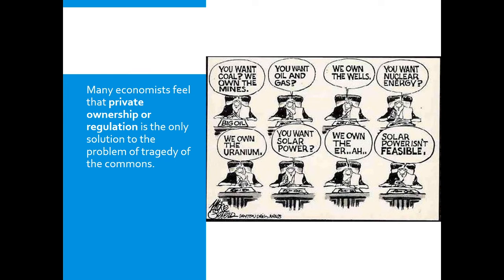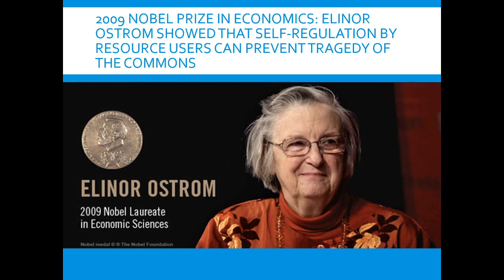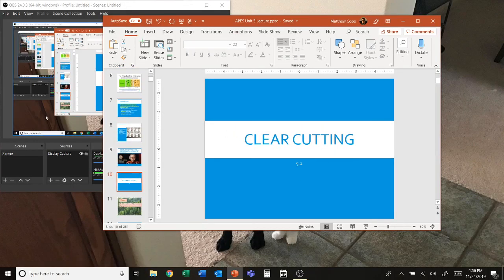Most economists feel that private ownership or regulation is the only solution to the tragedy of the commons. Some believe self-regulation of resource users can also prevent it. In 2009, Elinor Ostrom won the Nobel Prize in Economic Sciences for this theory. With that, we're going to end part one — part two will be all about clear-cutting.